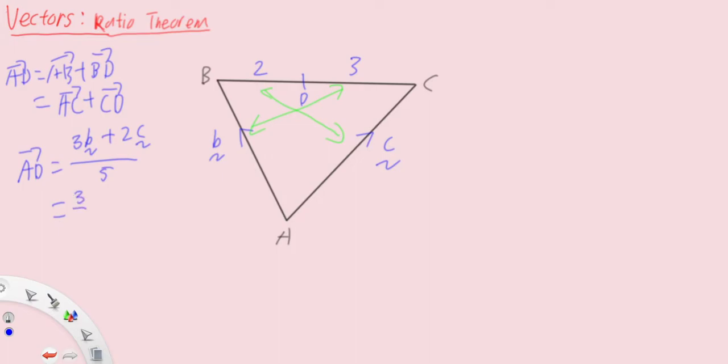And we automatically get the answer: 3 over 5 vector B and 2 over 5 of vector C. You can actually verify this with the answers here. We know that vector BC is simply C minus B, so we have 2 fifth of C minus B plus vector AB which is B and you get back the same answer. Likewise for vector AC plus vector CD.